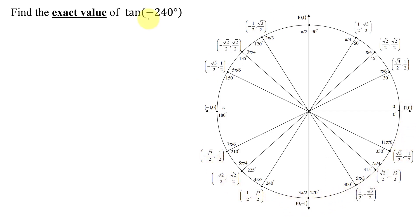Is negative 240 degrees on the unit circle? No — if you look at all the angles on the unit circle, they're greater than or equal to zero. There are two ways of doing this problem. I'm going to show you both, and you can pick the method you prefer.